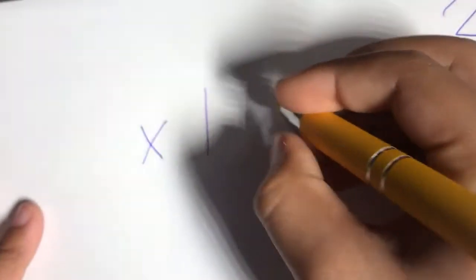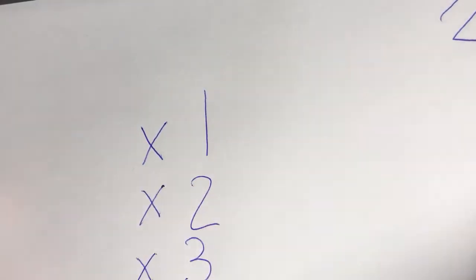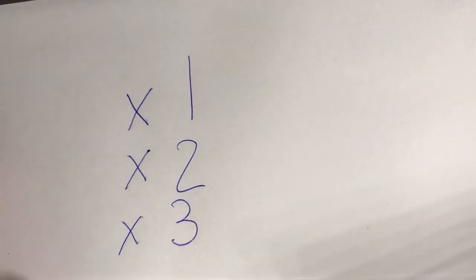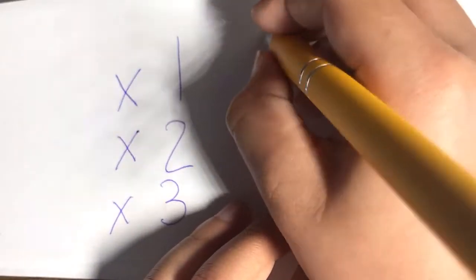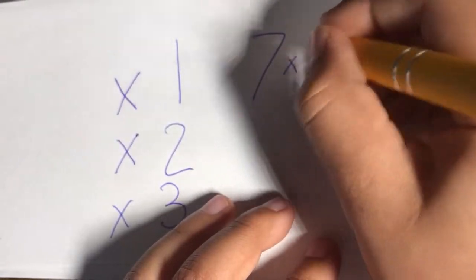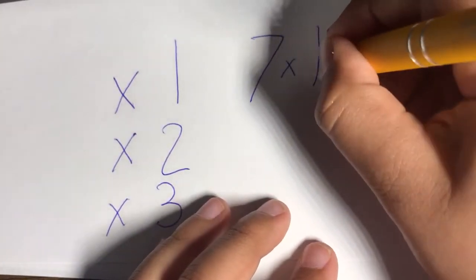Today we're going to learn about normal multiplication. We're going to do times one, times two, and times three. So times one, let's do our times one example. Seven times one equals blank. We don't know what it is.